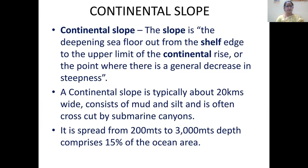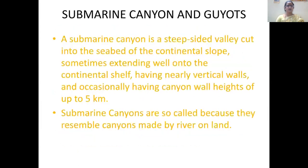A submarine canyon is a steep-sided valley cut into the seabed of the continental slope, sometimes extending onto the continental shelf, with nearly vertical walls and occasionally canyon wall heights of up to 5 kilometers. We hear about canyons made by rivers on land, but a submarine canyon is located underneath the seabed, near the continental slope. The vertical wall height of up to five kilometers - just imagine how deep that is.